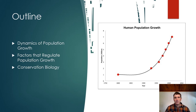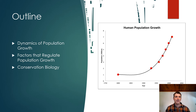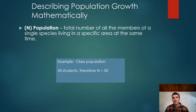Here's an outline for our discussion today and Friday. We're going to talk about dynamics of population growth — dynamics being the factors that affect change. We'll cover some terminology and a bit of mathematics. The most important area, though, is the factors that regulate population growth and how that relates to conservation biology and ecological systems. So while we'll start with terminology and some math, keep in mind that we're leading toward factors that regulate population growth and the implications for conservation biology.